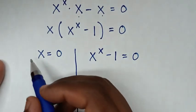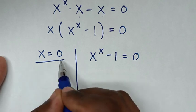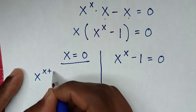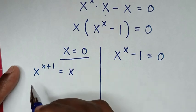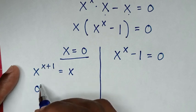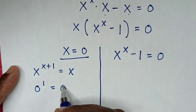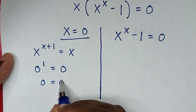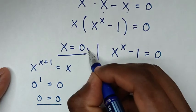Now let's check if x equal to 0 is correct. From our problem x power of x plus 1 is equal to x, we substitute x equals 0, so it will be 0 power of 0 plus 1, which is 0 power of 1, and that equals 0. Left side and right side are equal, so it is true for x equals 0.